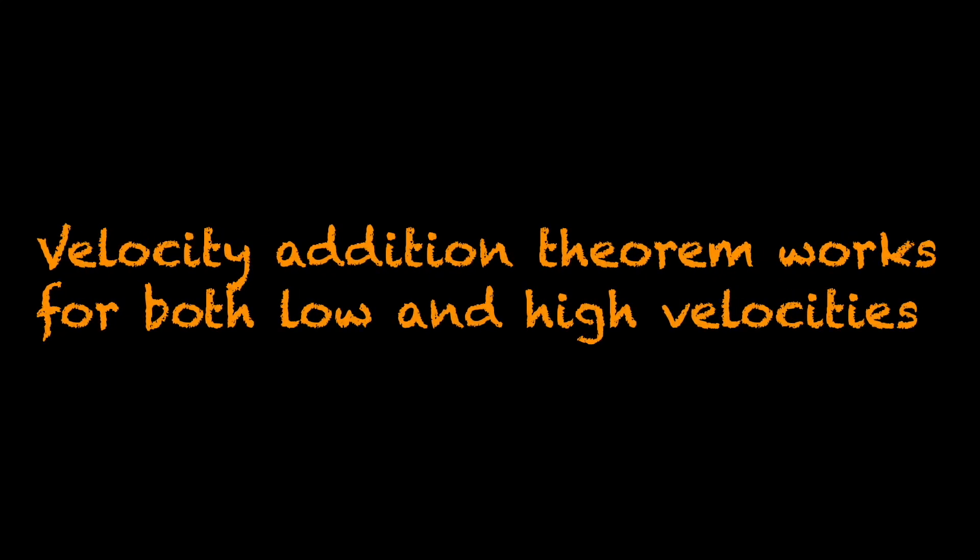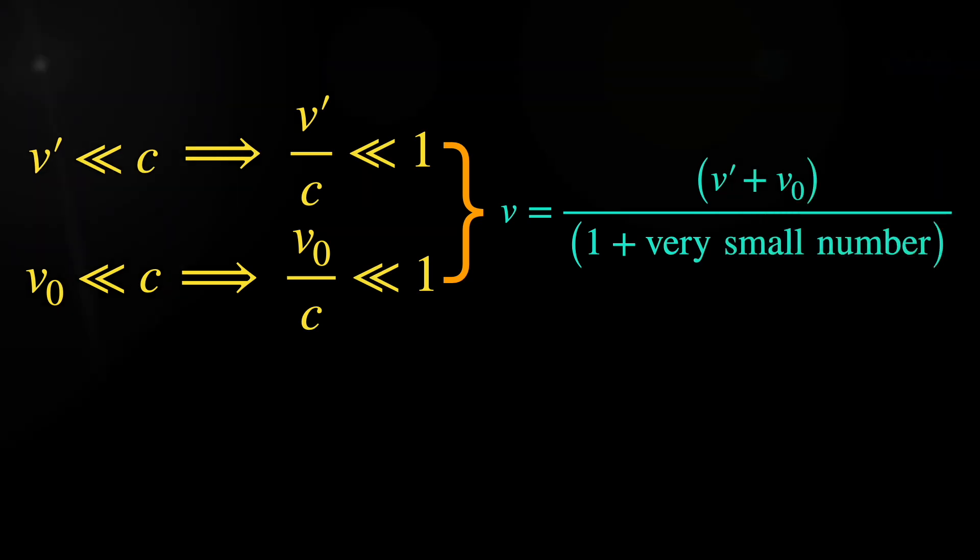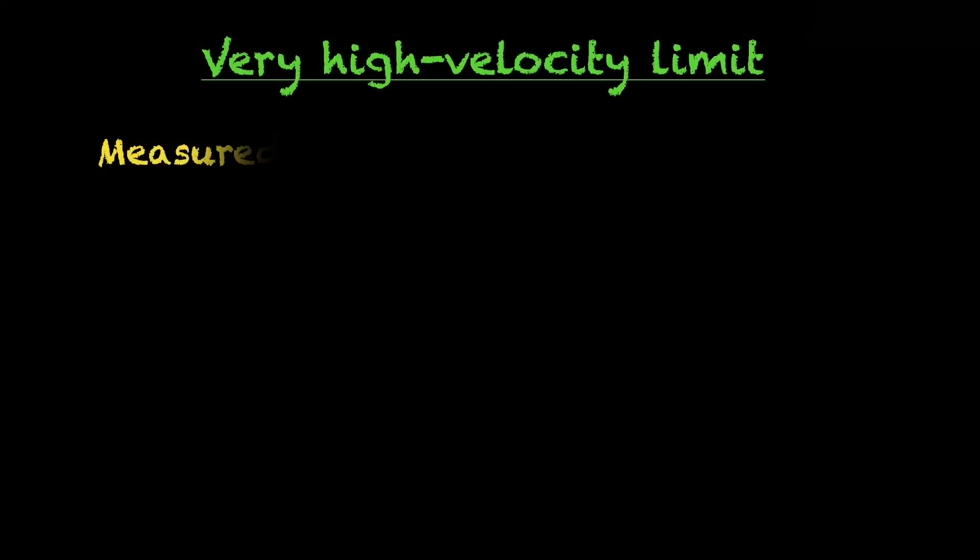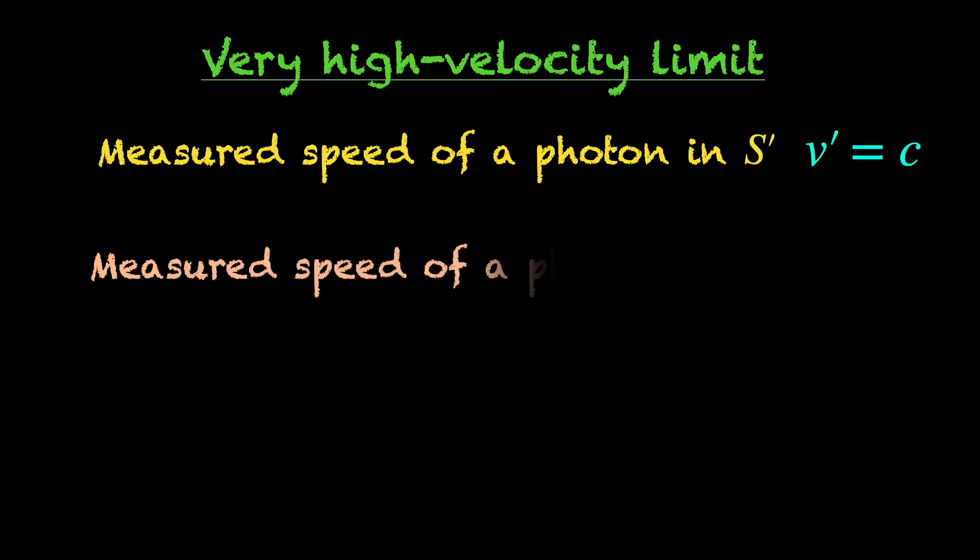Note that the velocity addition theorem works perfectly for all possible values of velocities. When the velocity V0 and V' are small compared to C, the factor in the denominator is practically 1. That gives us our familiar velocity addition formula where the velocities just add up. On the other end of the spectrum, if you think of observers in S and S' measuring the speed of a photon, both should get C according to the second postulate. See how using V' equals C in the velocity addition theorem, V, the measured speed of photon in the S frame turns out to be C too for any value of the relative velocity V0 between S and S'.